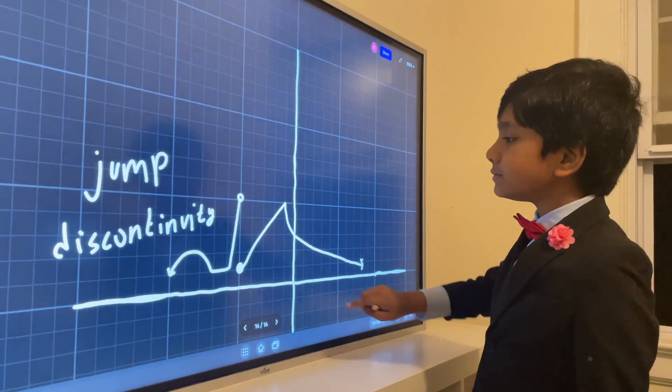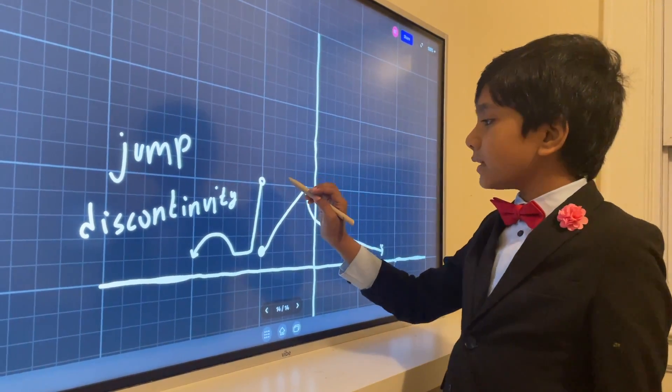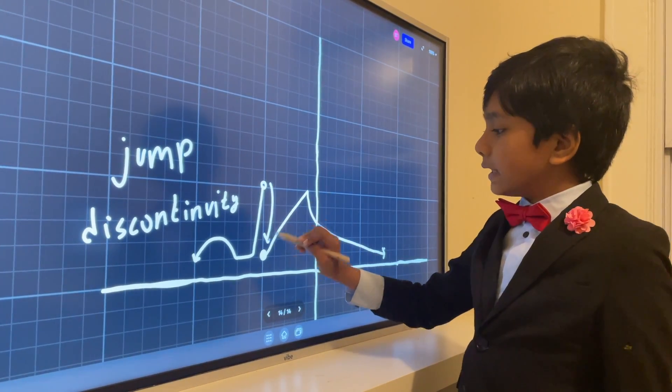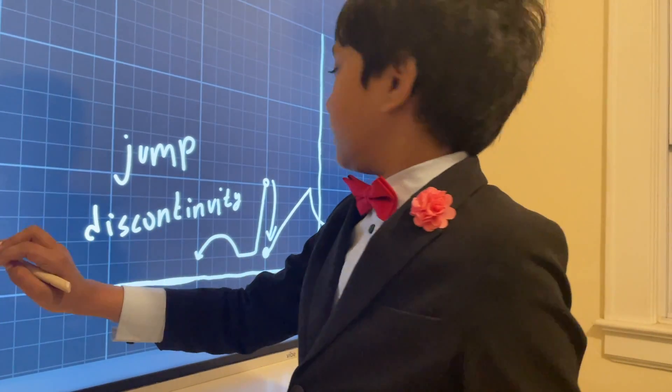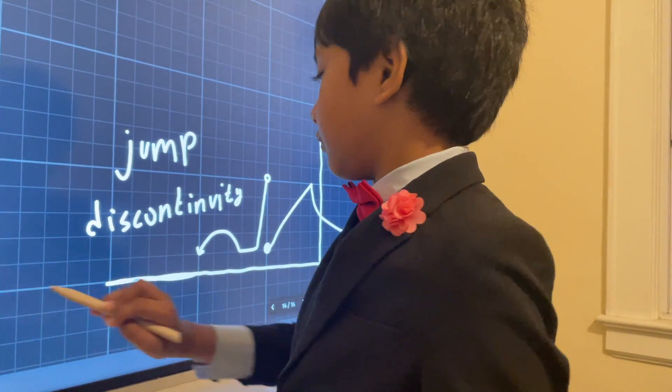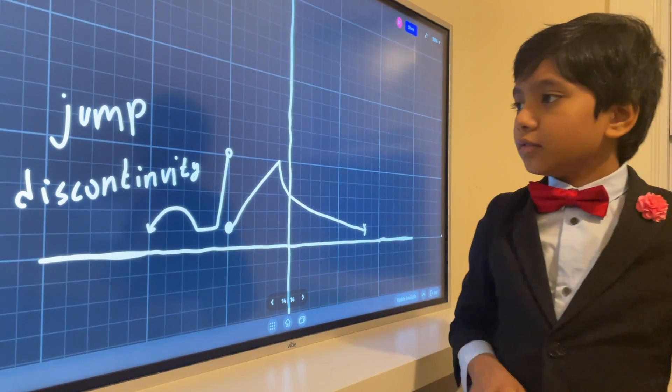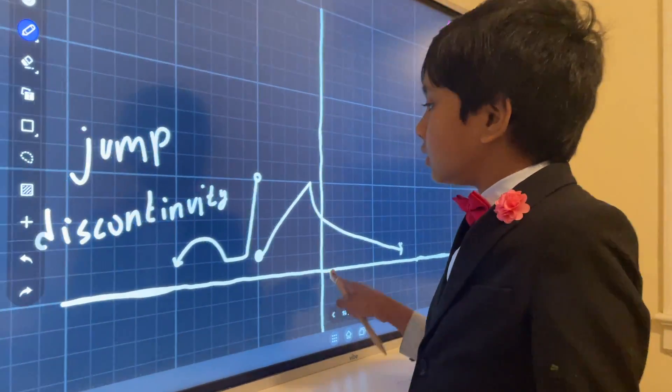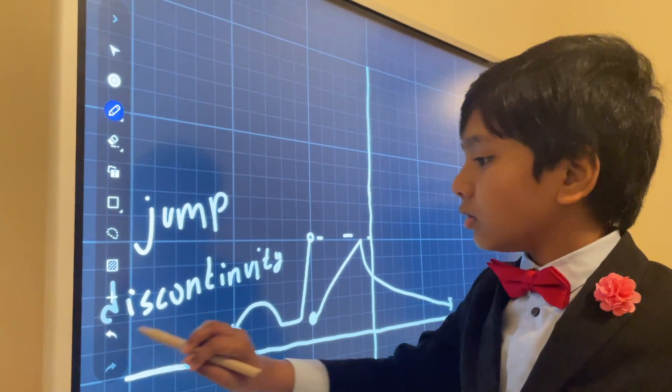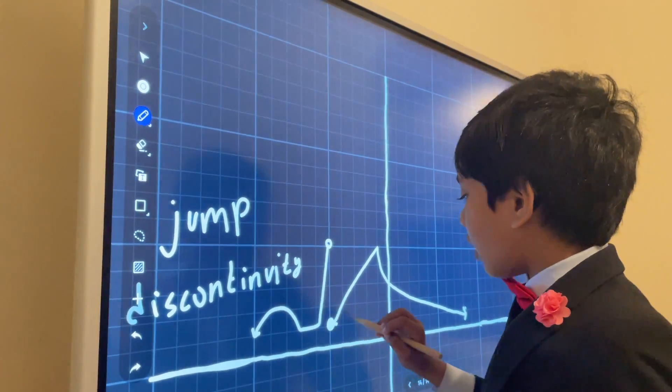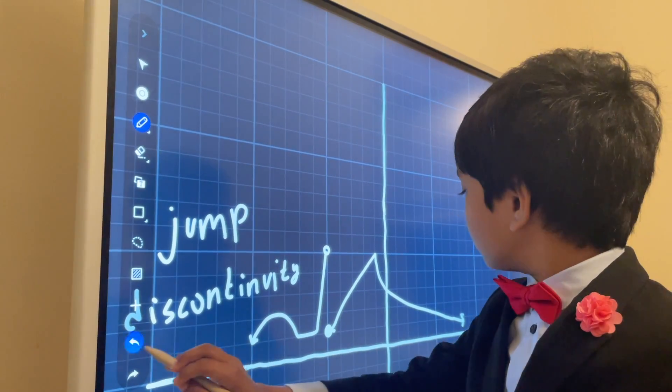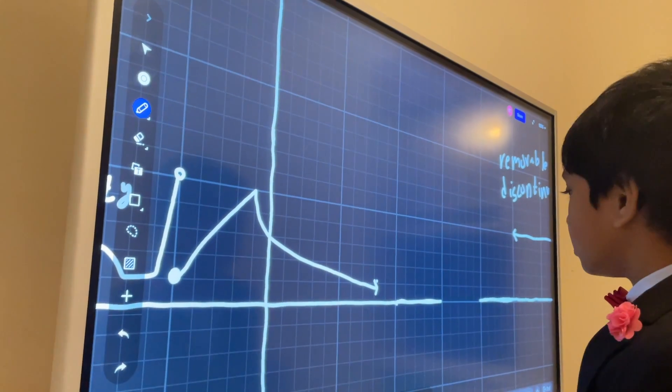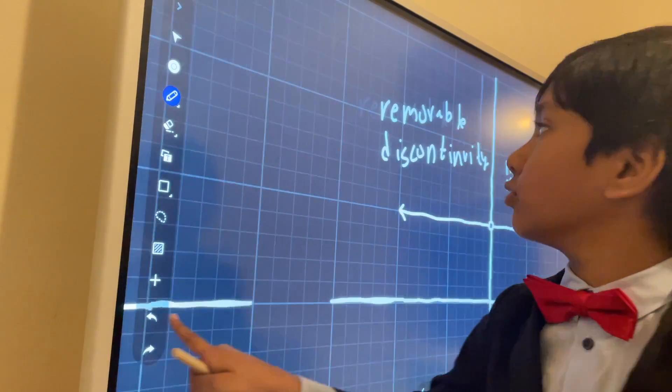Jump discontinuity is basically where you have to jump from one point to another. There's an instant change in y that doesn't correspond with the original function. You can say the output isn't equal to the actual value. The y value of this hole isn't equal to the y value of the actual value. So that's a jump discontinuity.